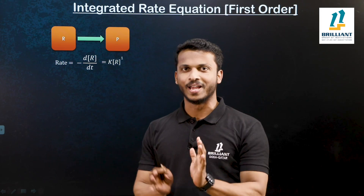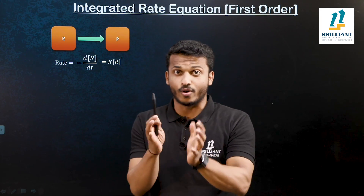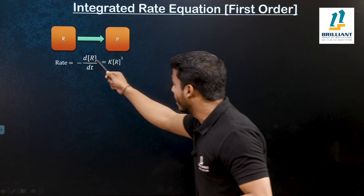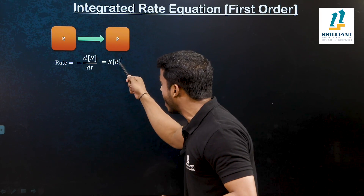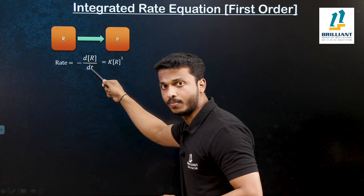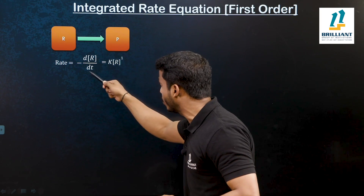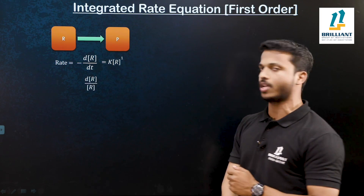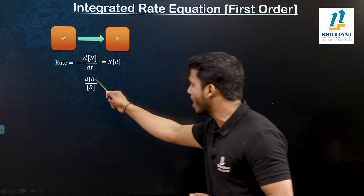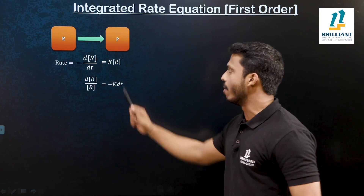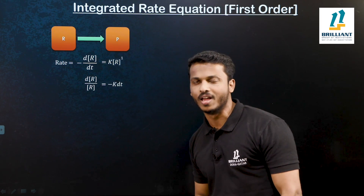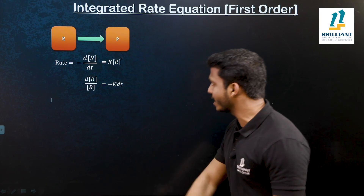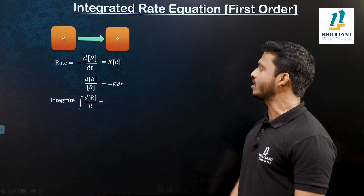Before integration, let me just rearrange this equation. Let me bring R to the denominator and dt to the right side. So what this equation becomes: dR by R is equal to minus k into dt. So let us integrate this equation.